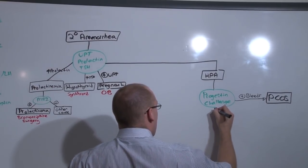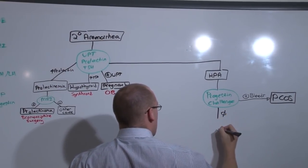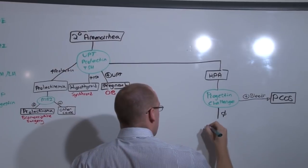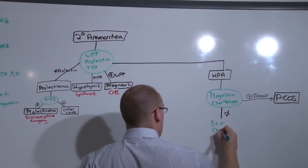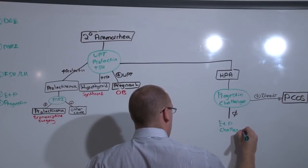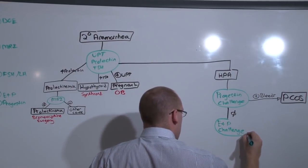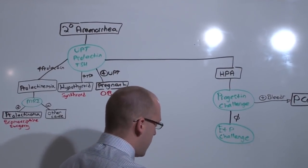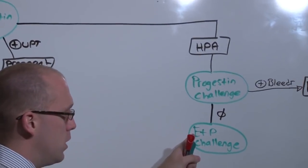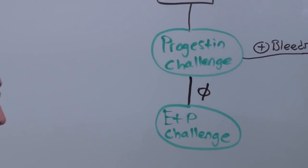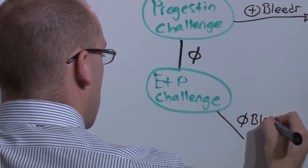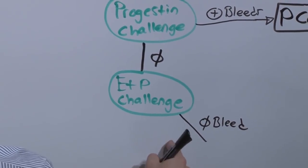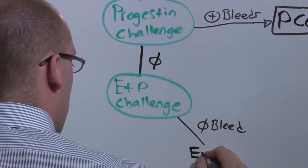But if she does not bleed with progestin, the next step is the estrogen and progesterone challenge. And you ask, in the absence of the rest of the axis, can we proliferate the endometrium and then make it bleed? Here, if she cannot bleed, the endometrium is the problem. It is endometrial dysfunction.